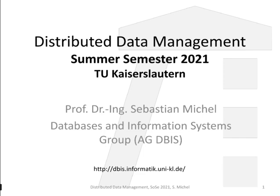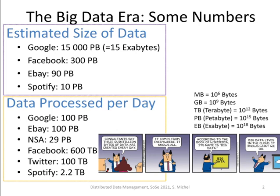The title of the lecture is Distributed Data Management, and we will go distributed because we want to deal with large amounts of data. What does large amounts of data mean? Here are some numbers — they're already some years old, but they still give you a good understanding of what big data really means. In the case of Google, we're talking not about gigabytes but about petabytes: 15,000 petabytes, which corresponds to 15 exabytes. Facebook has 300 petabytes, eBay 90 petabytes, and Spotify 10 petabytes.